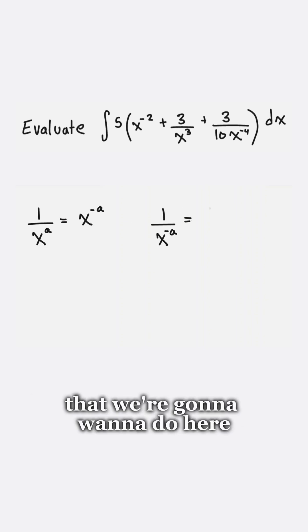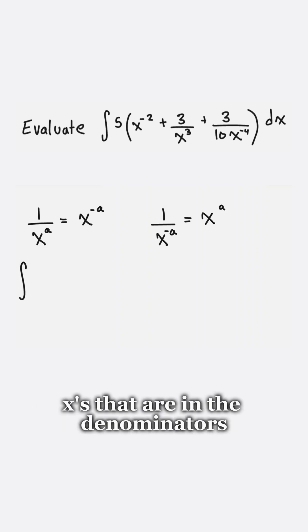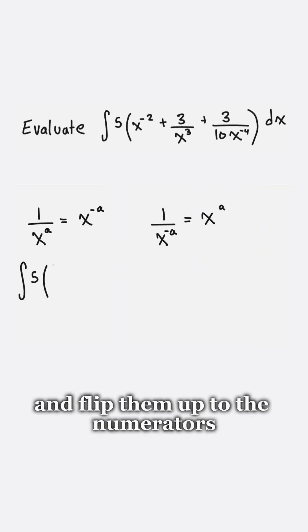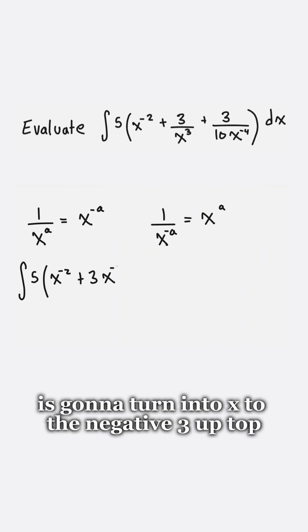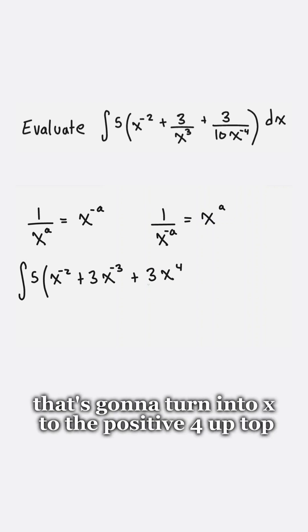So the first thing that we're gonna want to do here is just take all of those x's that are in the denominators and flip them up to the numerators. So that x to the three on the bottom is gonna turn into x to the negative three up top. That x to the negative four on the bottom, that's gonna turn into x to the positive four up top.